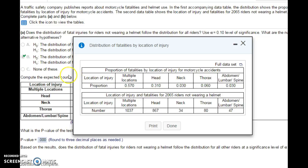To look at an example, here's a predefined distribution: fatalities by location of injury for motorcycle accidents. If you die in a motorcycle accident, our distribution says that 57% of the time you had injuries in multiple locations, 31% of the time you had a head injury, and so on. This is our predefined distribution.